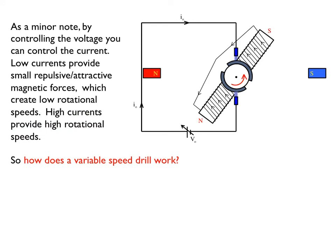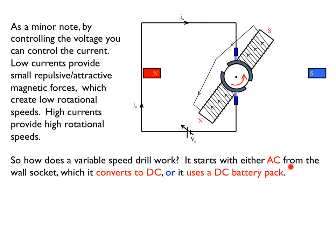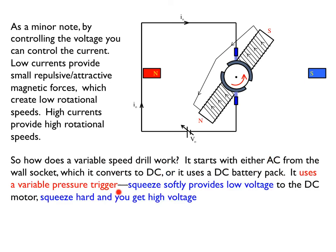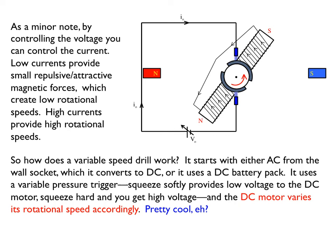How might this be useful? Consider a variable speed drill. Drills like this either take AC out of the wall and convert it to DC, or they use DC power packs. They have variable pressure triggers, which are such that when you squeeze them just a little bit, they provide low voltage. If you squeeze them a lot, they provide high voltage. Lower voltage generates lower current, which corresponds to lower rotational speeds. Higher voltage, higher currents, higher rotational speeds. That's how the DC motor varies its rotational speed. Pretty cool.